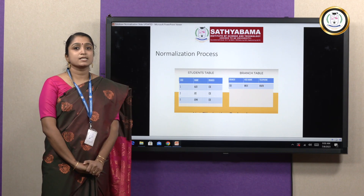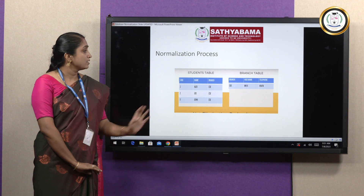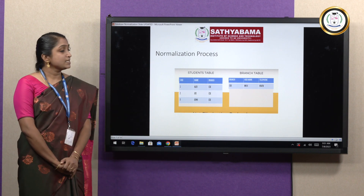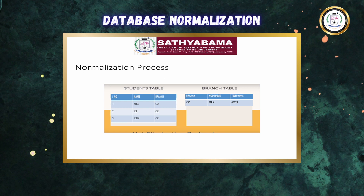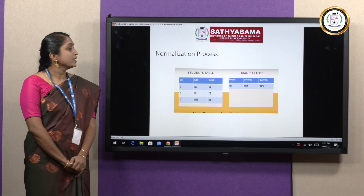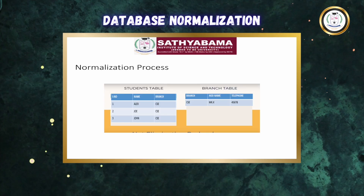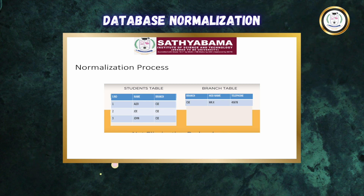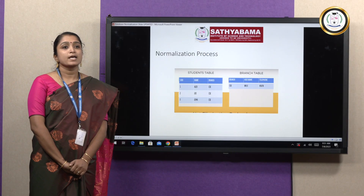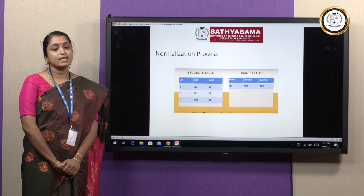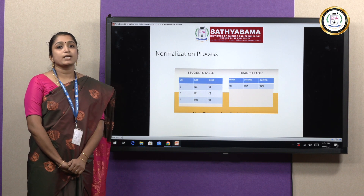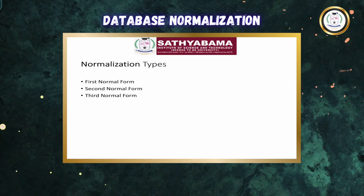This way, we can avoid all the anomalies discussed previously. First, redundancy is reduced greatly. Insertion is easy — adding new data to the branch table is straightforward. For updation, if you want to update the telephone number, we just need to update a single row. For deletion anomaly, even if we delete the student detail, the branch detail will remain. This is how normalization helps avoid redundancy and insertion, updation, and deletion anomalies.